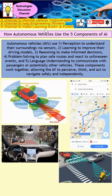How a vehicle may actually use the 5 components of AI to make it a fully autonomous vehicle. I will explain in 2 situations: the first one will be human driving vehicle, and the next one will be the autonomous vehicle.